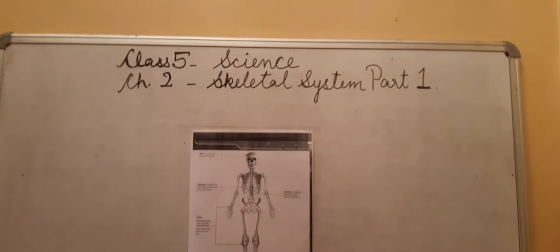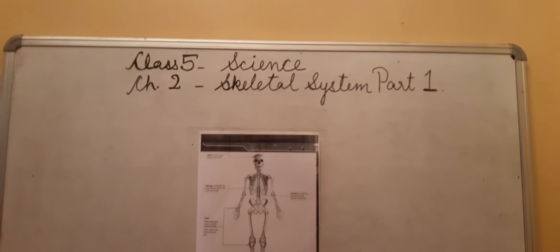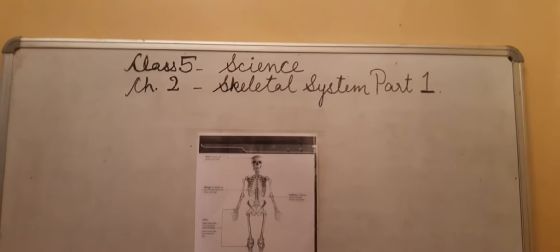Today we are here for the science class and we are doing the chapter skeletal system. First of all, I would like to tell you what a skeletal system is. The skeletal system is made up of bones, joints and cartilage.